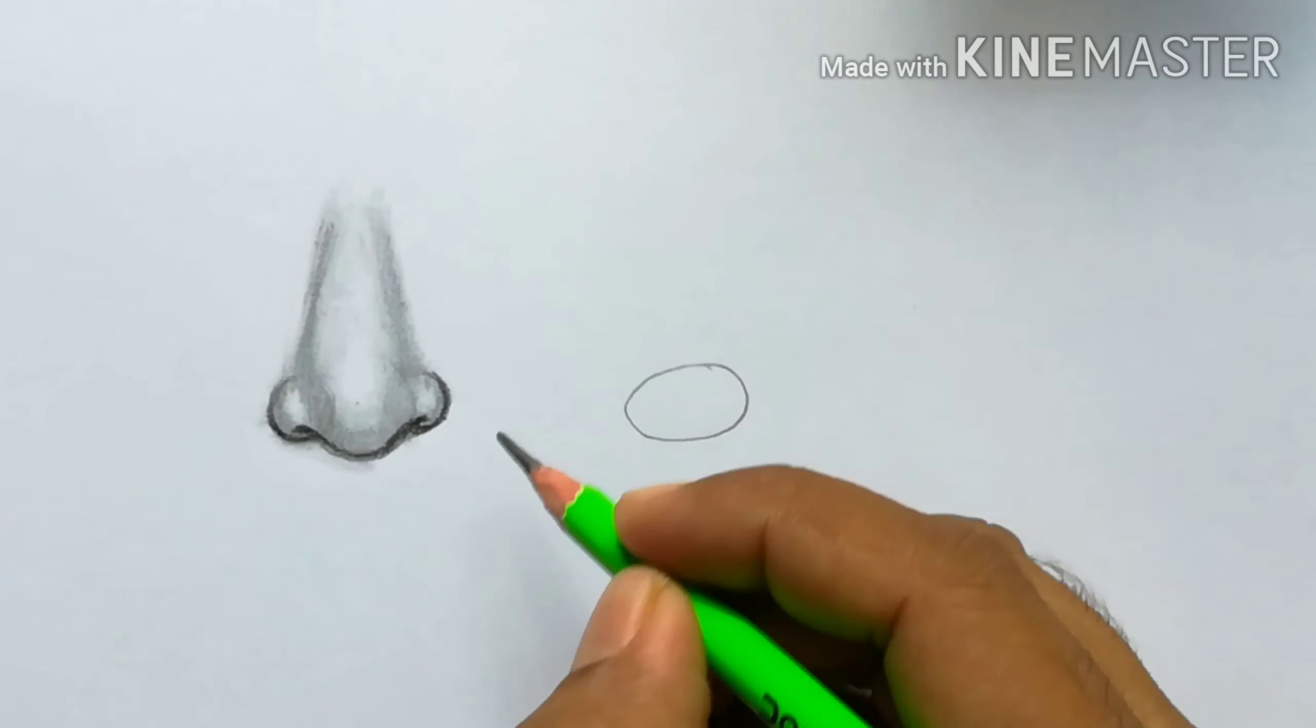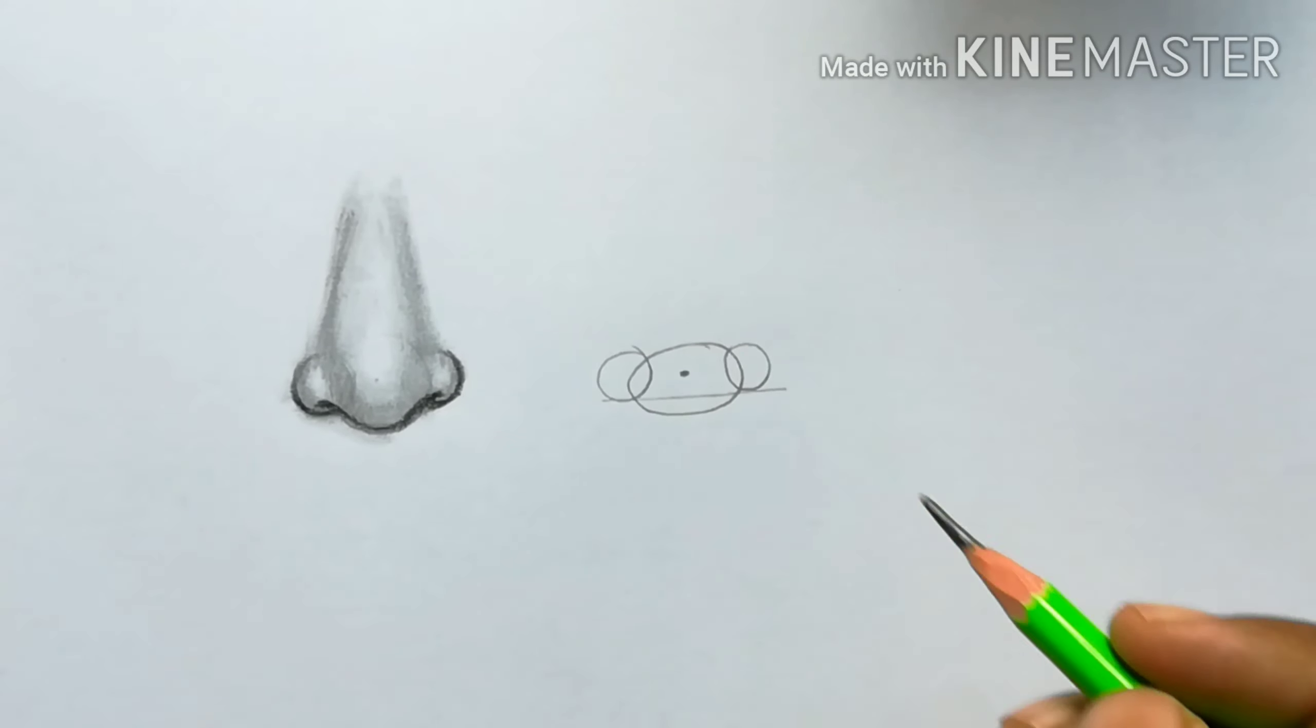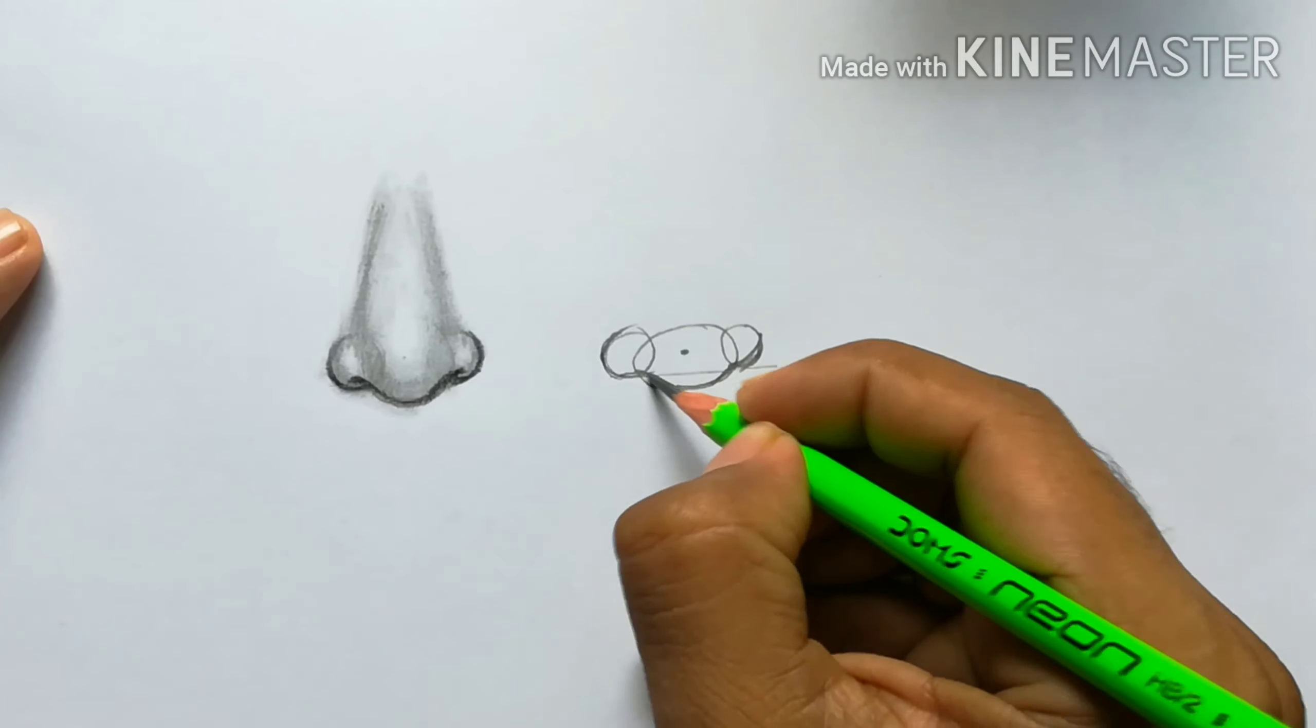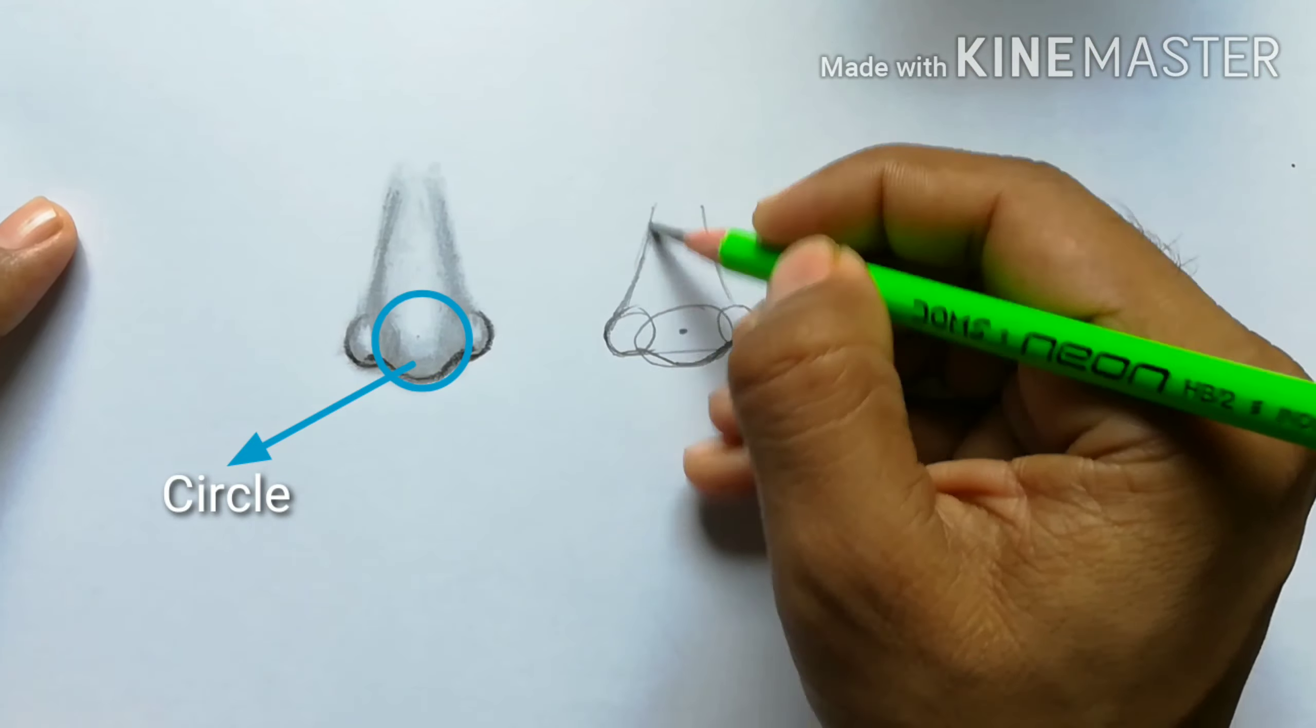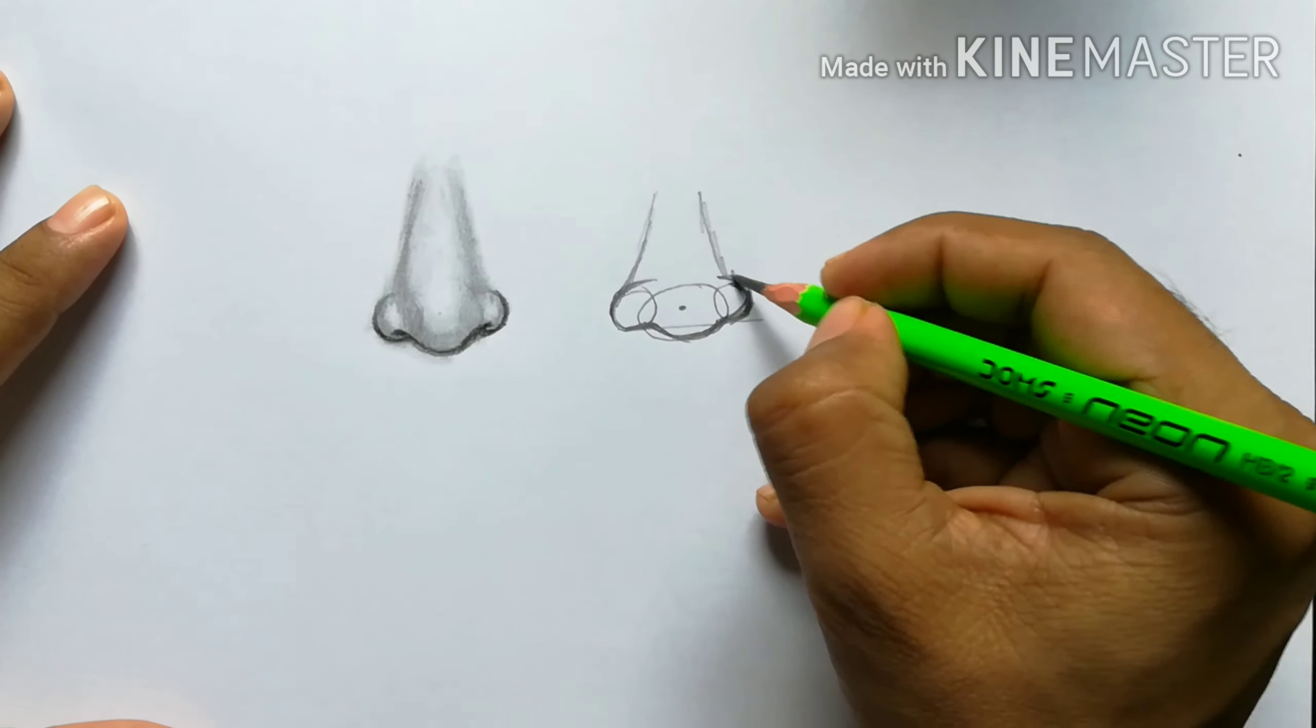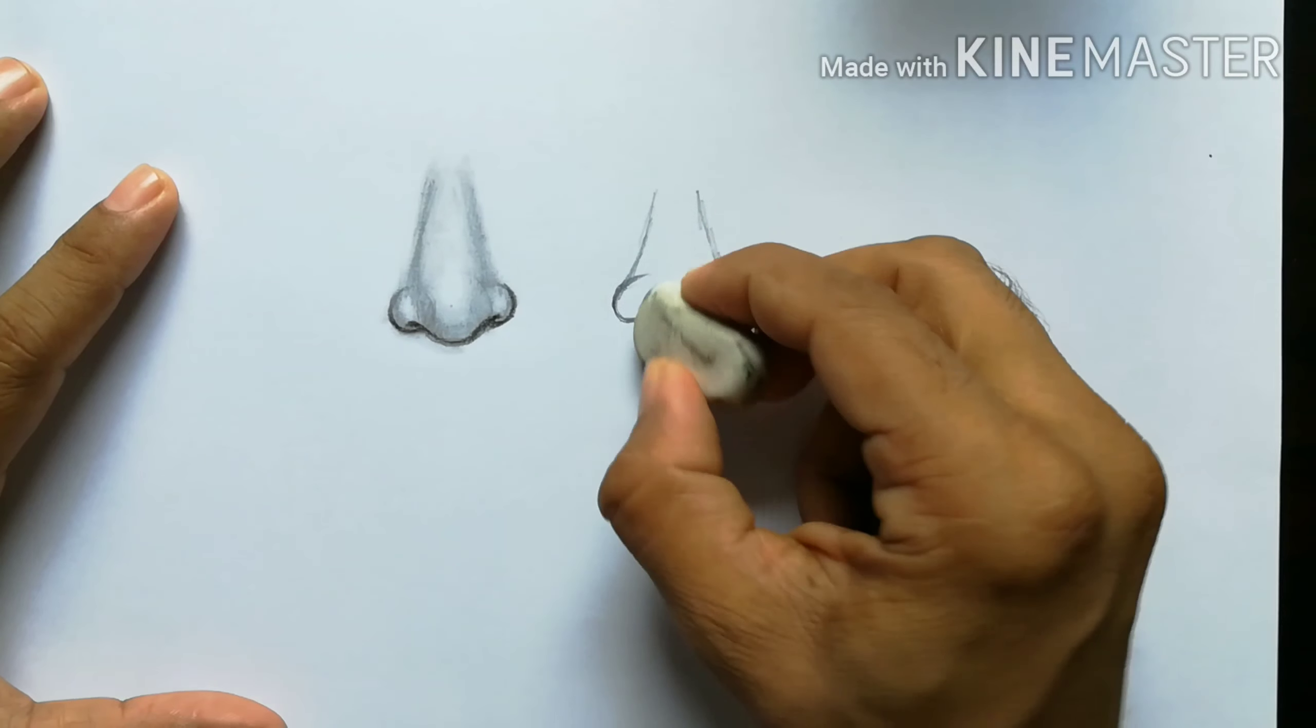In a flatter nose, we just need to draw an oval in the center. Just remember, in the previous nose we drew a circle in the center, but for a flatter nose we need to draw an oval, and then we can proceed in the same way.